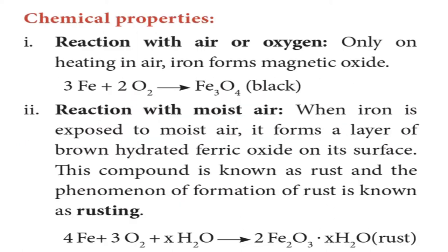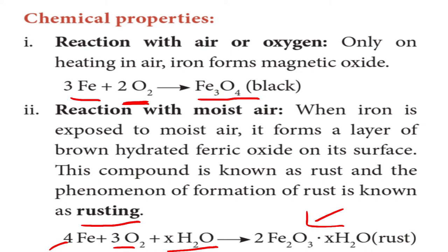Chemical properties: Reaction with air or oxygen — when iron is heated with oxygen, it forms magnetic oxide Fe₃O₄ (black). Reaction with moist air — iron reacts with oxygen and excess water to form rust, 2Fe₂O₃·xH₂O. This process is called rusting.